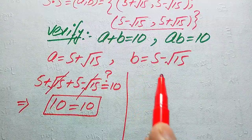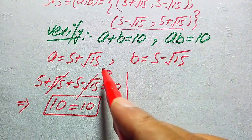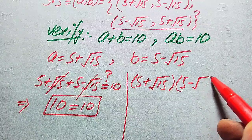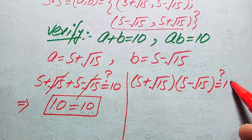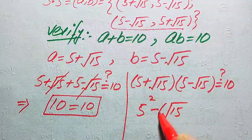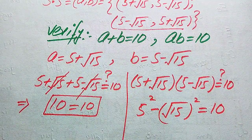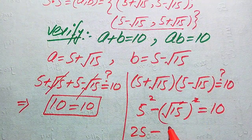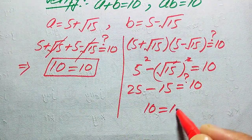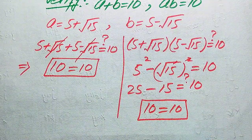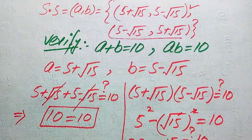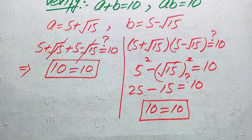We verify the second equation: ab equals (5 plus square root of 15)(5 minus square root of 15). Using the algebraic identity (x + y)(x - y) = x² - y², this becomes 5 squared minus (square root of 15) squared, which equals 25 minus 15, equals 10. So ab equals 10, which confirms both sides are equal. Both solution sets satisfy the given equations. This is our final answer.